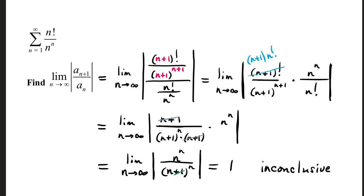As n gets really large, the plus one becomes insignificant. So, we have n to the n over n to the n, which equals one. That's inconclusive. We can't say whether or not the series converges or diverges by this test. You would have to pick a different test to see if we had a convergent or divergent situation.